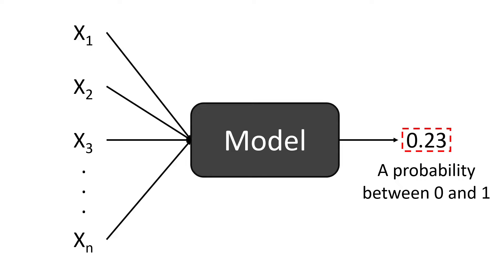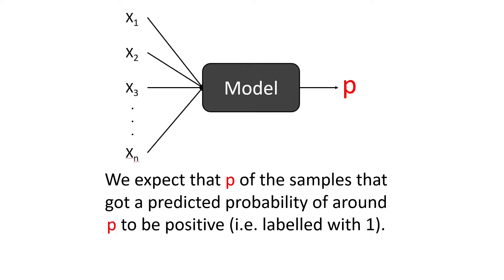For instance, here the model predicts that the sample has a chance of 23% to be a positive sample, or here a probability of 83% to be a positive sample. And now a natural question arises. What percentage of the samples for which the model predicted a probability P to be positive are actually positive?